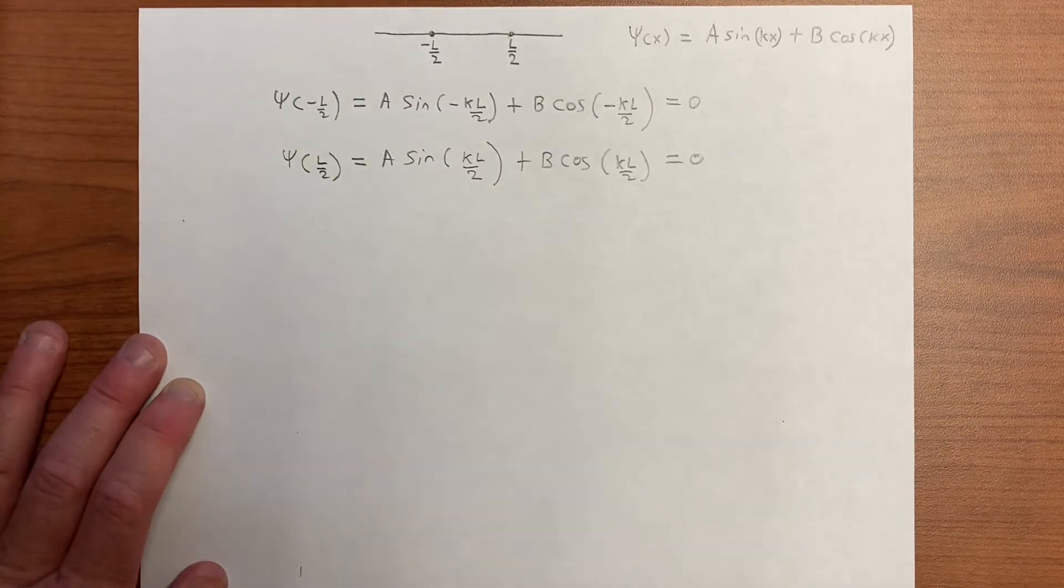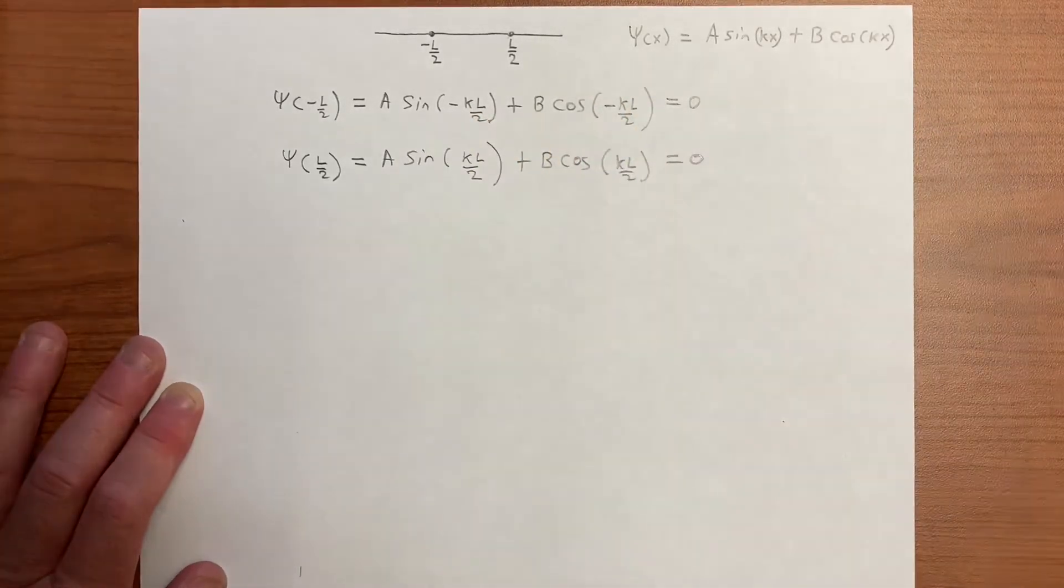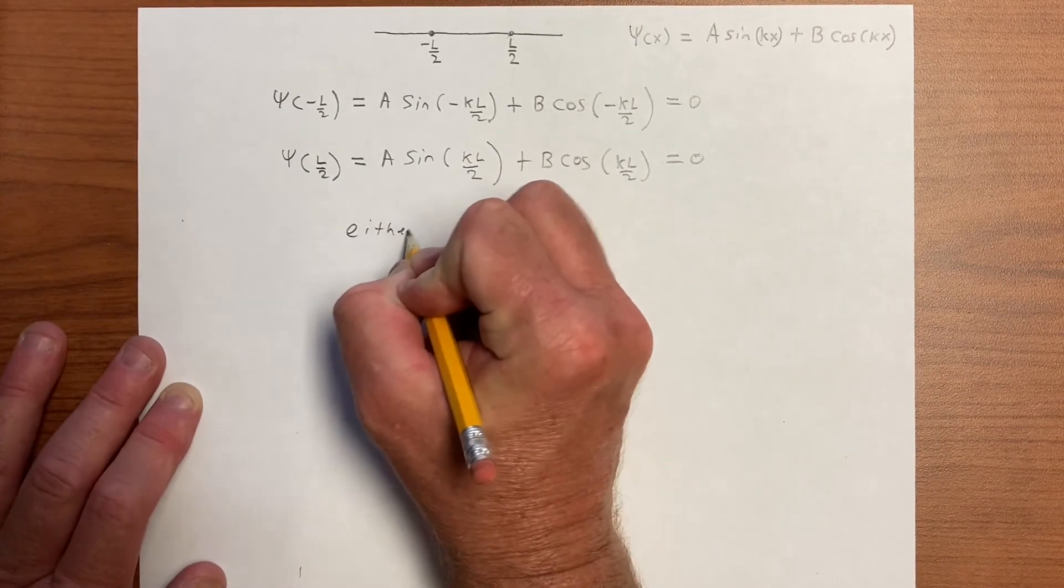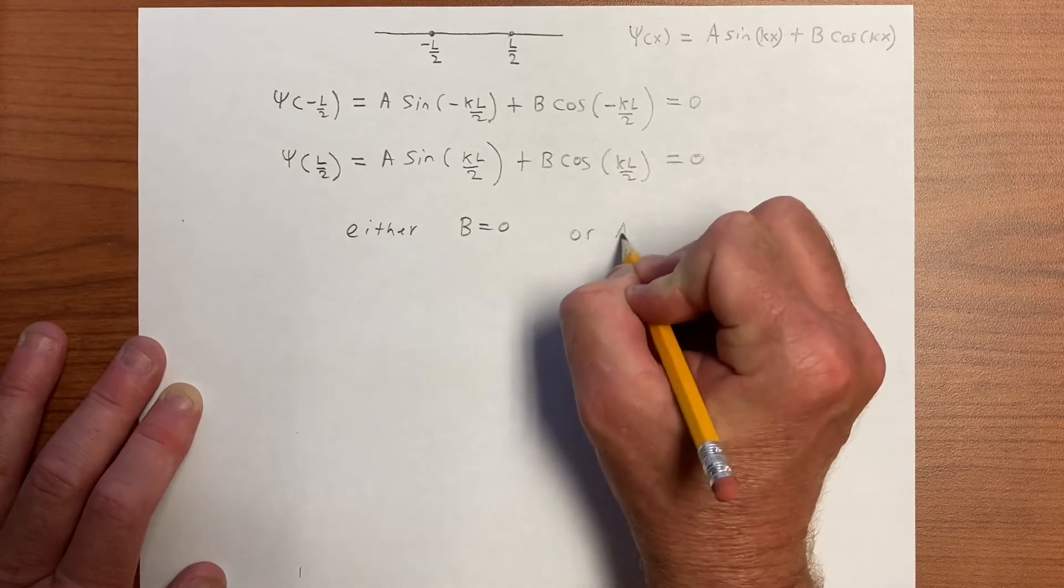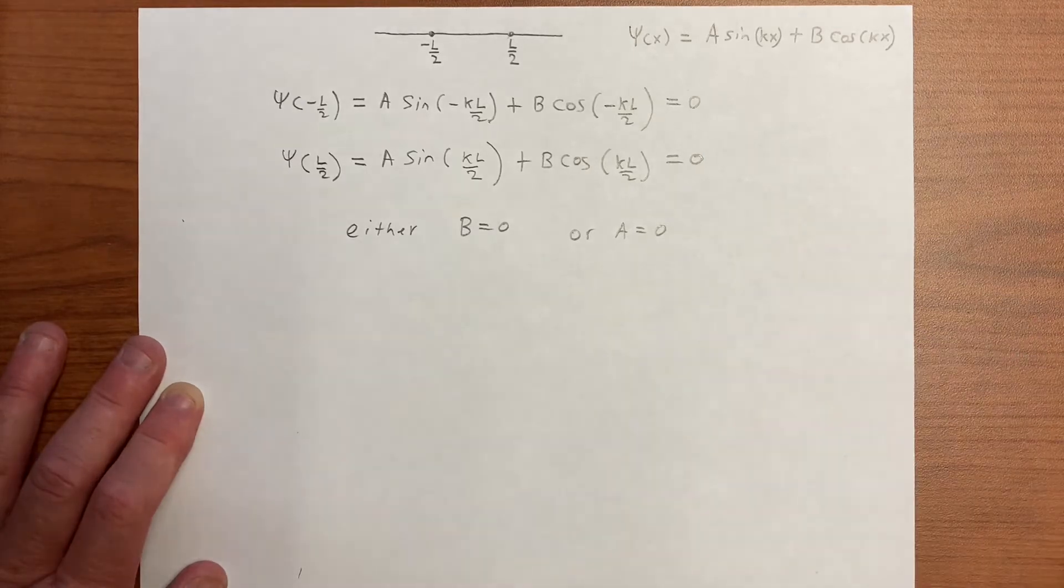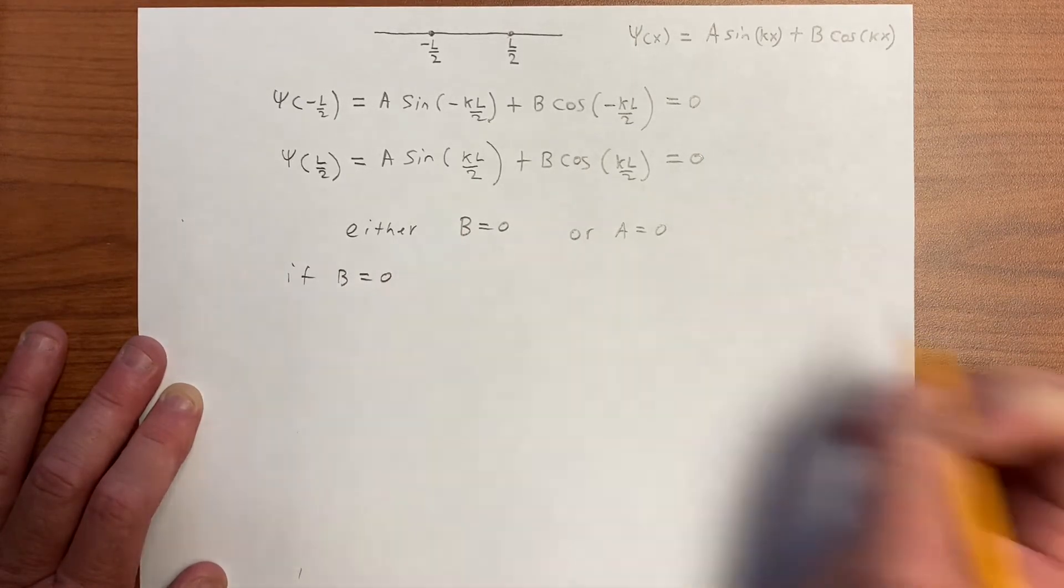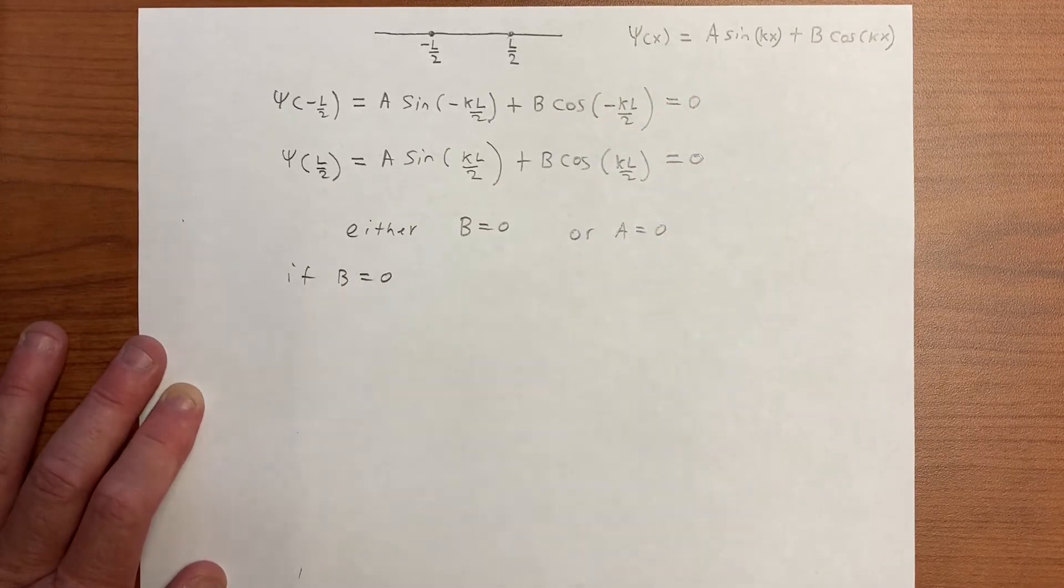Now, there are two ways of satisfying this. They can't both be 0, or the sine and the cosine can't both give us 0. So either we have either B equals 0, or A is equal to 0. If B equals 0, then this term disappears, and we have this.